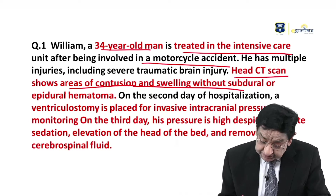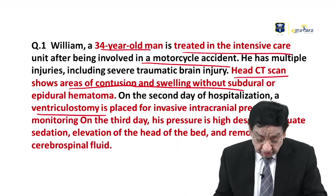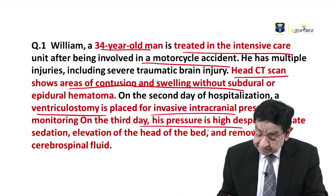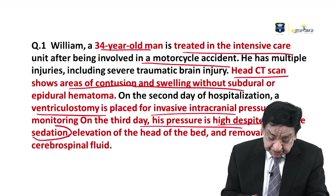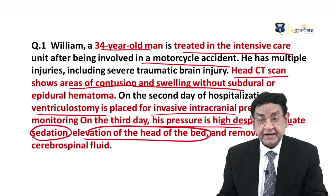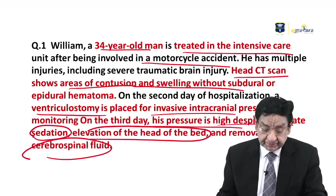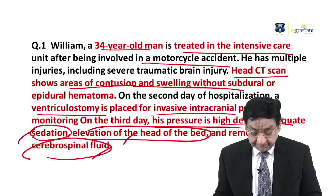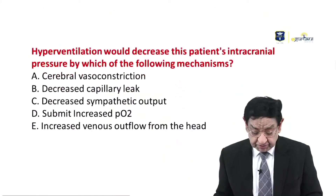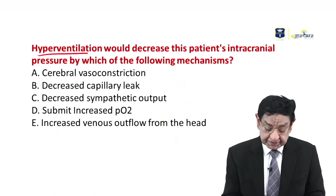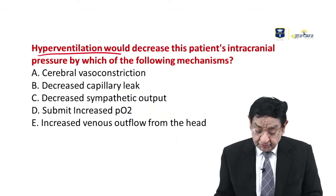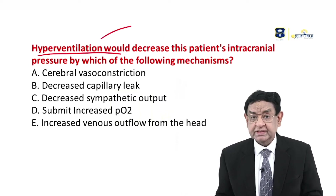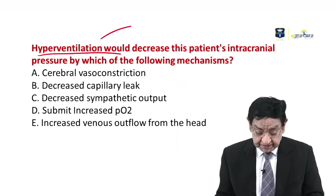On the second day, he had been put on ventriculostomy to measure the intracranial pressure. On the third day, the pressure is still very high despite sedation, elevation of the head end of the bed, and removal of CSF. Three procedures have been done to control his raised ICP but they did not work. Now the question is: they plan to do hyperventilation for this patient. What is the basic concept by which hyperventilation is going to reduce intracranial pressure?